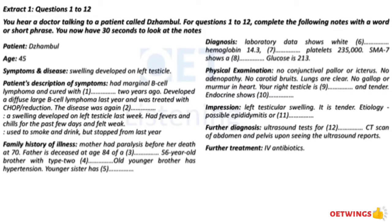As per the laboratory data, your white blood count is 13.8. Haemoglobin 14.3. Haematocrit 42.4. Platelets 235,000. SMA-7 shows a potassium of 3.9. Glucose is 213. Physical examination shows no conjunctival pallor or icterus. No adenopathy. No carotid bruits. Lungs are clear. No gallop or murmur in heart. Your right testicle is markedly erythematous, swollen and tender. Endocrine shows symptoms of type 2 diabetes mellitus.